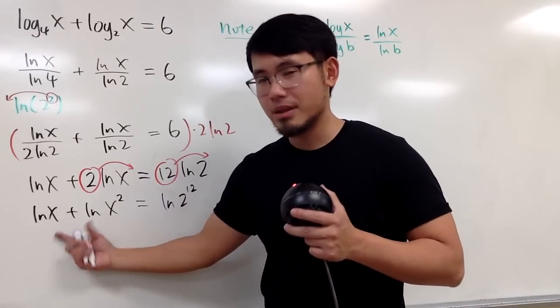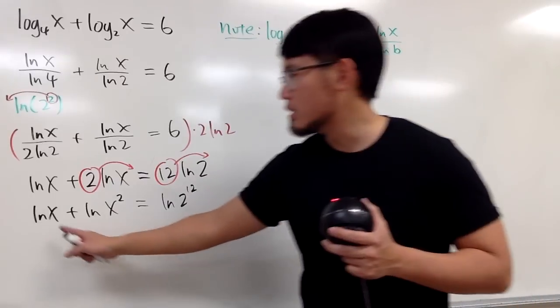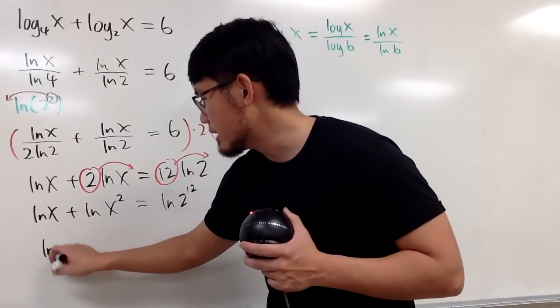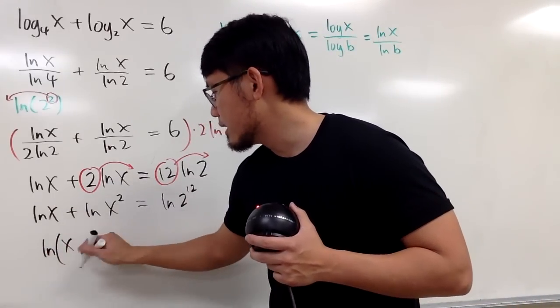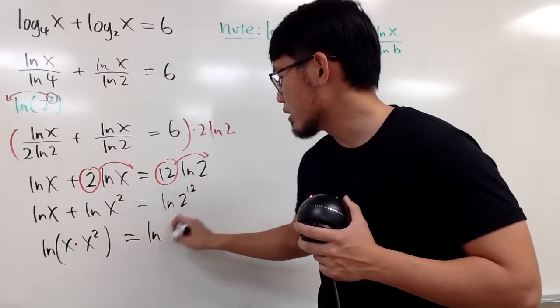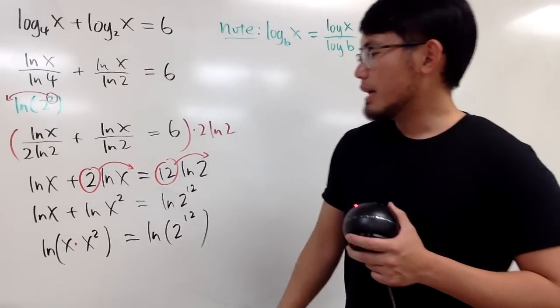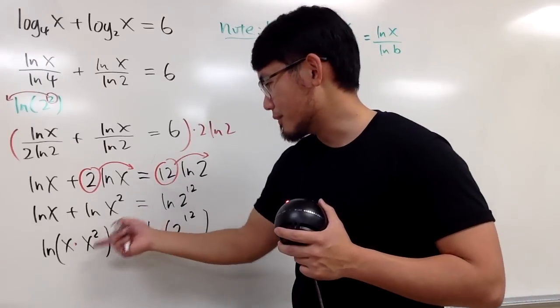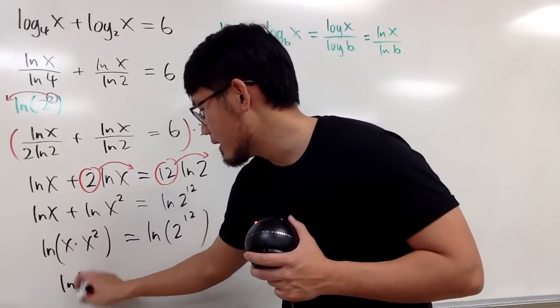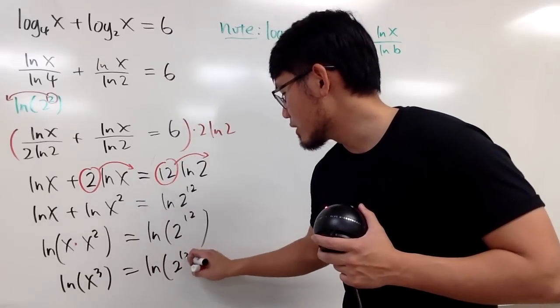Anyway, this right here is what? The sum of 2 natural logs is the natural log of the product of this and that. In other words, this is natural log of x times x squared, and this is natural log of 2 to the 12th power. And now, of course, this is natural log of x to the 3rd power, and this is natural log of 2 to the 12th power.